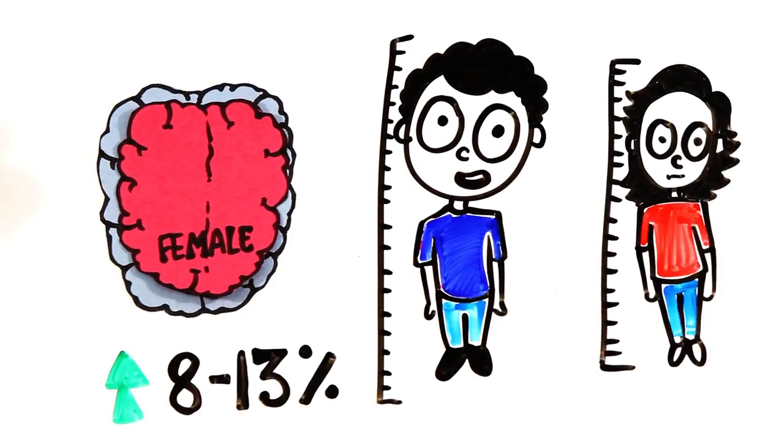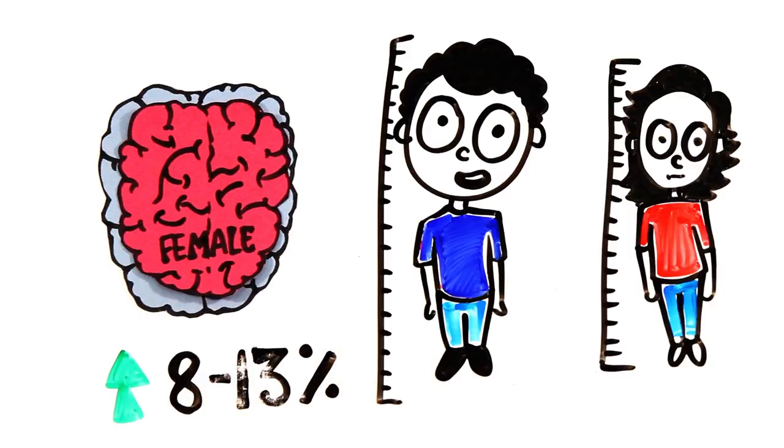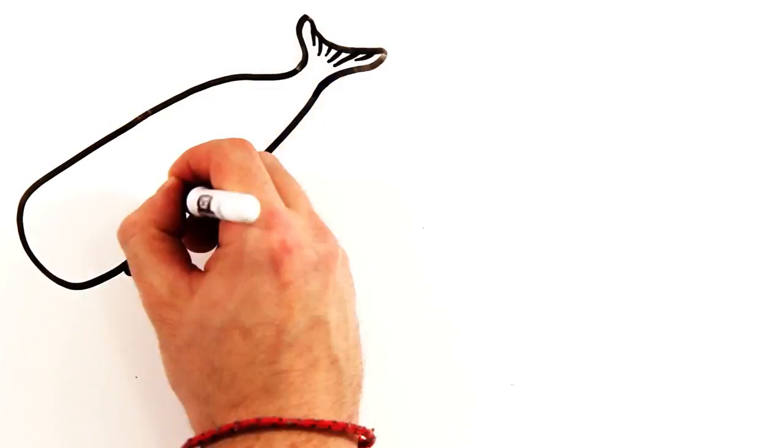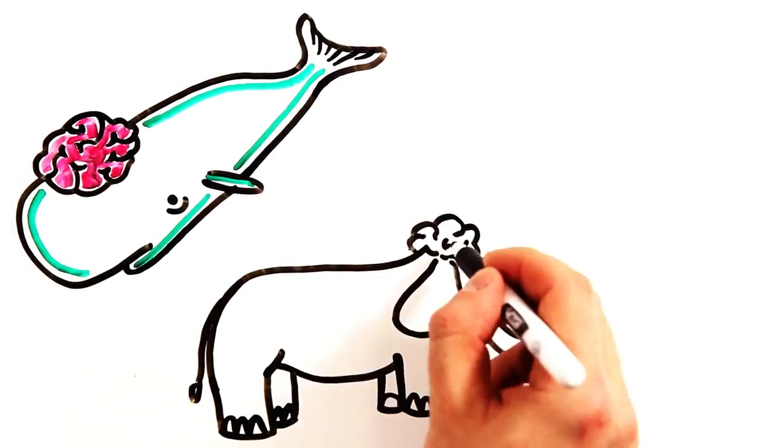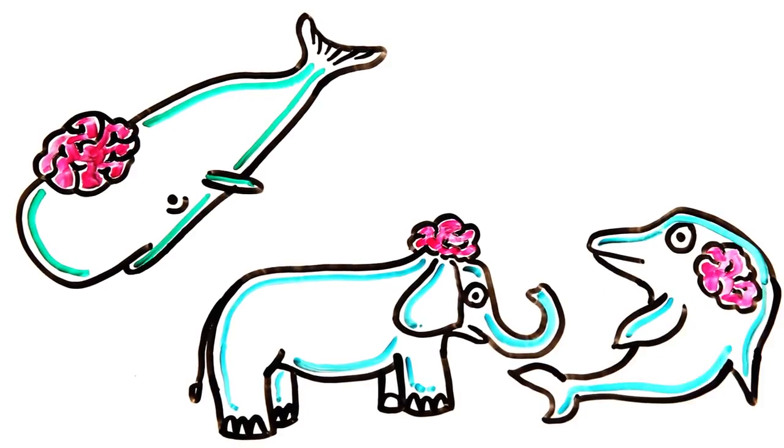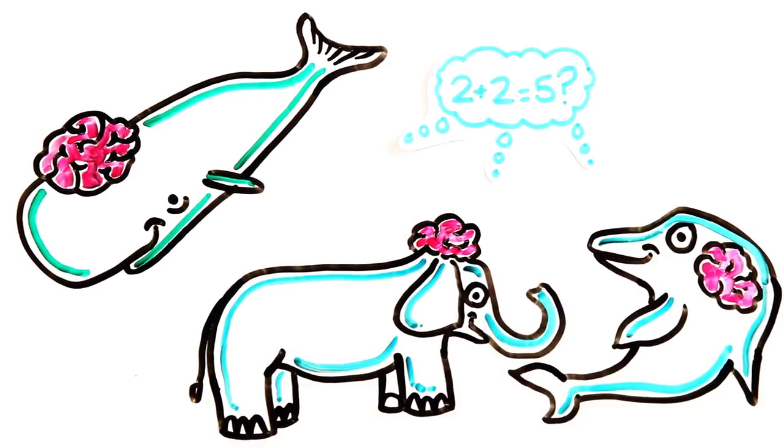Women's brains have more gyrification or brain folding and as a result a greater cortical surface area. Besides, bigger isn't always better. Sperm whales, elephants and dolphins all have larger brains than humans and while they are smart, their cognitive abilities are less than our own.